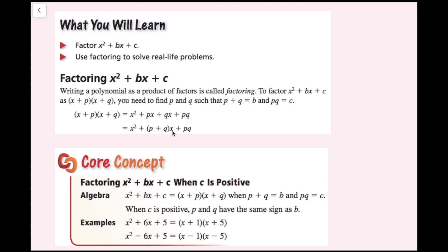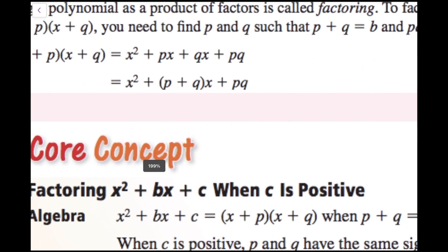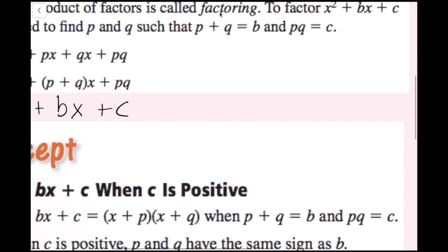If I rewrite this as x squared plus bx plus c, the b is the coefficient of x and p plus q is the coefficient of x, and c is the constant and pq is the constant. So that's why we know we need p plus q to equal b and p times q to equal c.